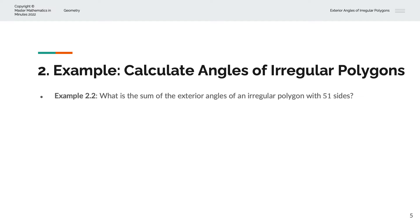In the second example, we are asked to calculate the sum of the exterior angles of an irregular polygon with 51 sides. The sum of the exterior angles is always 360 degrees, regardless of how many sides the polygon has, and this holds for both regular and irregular polygons.